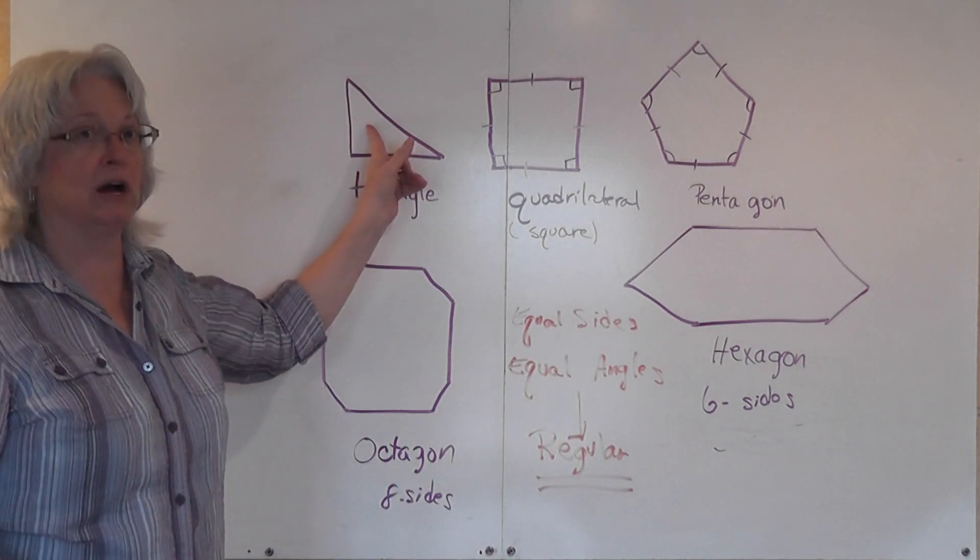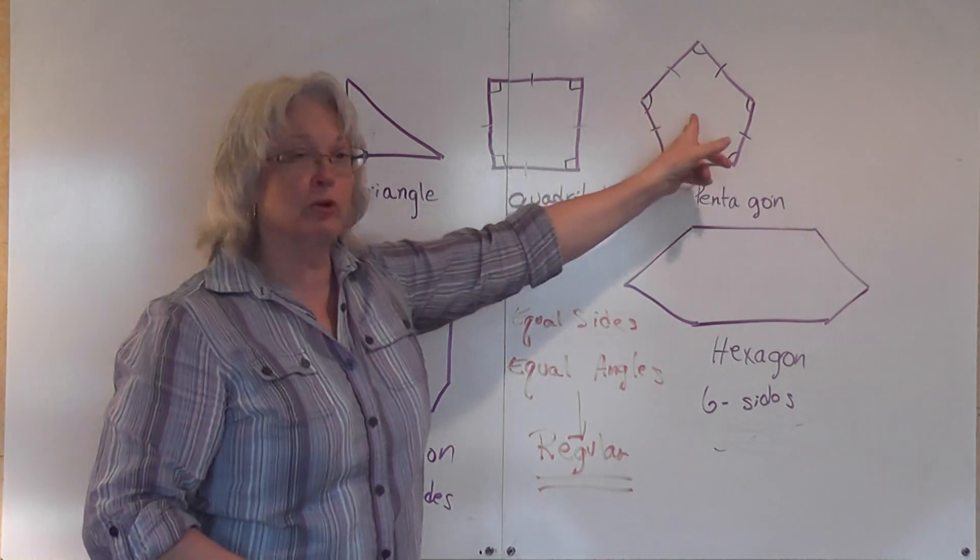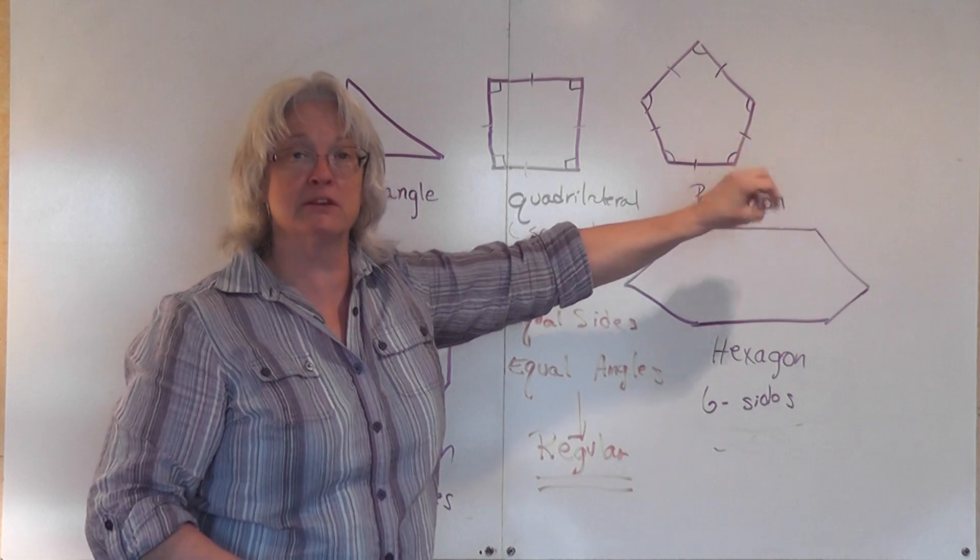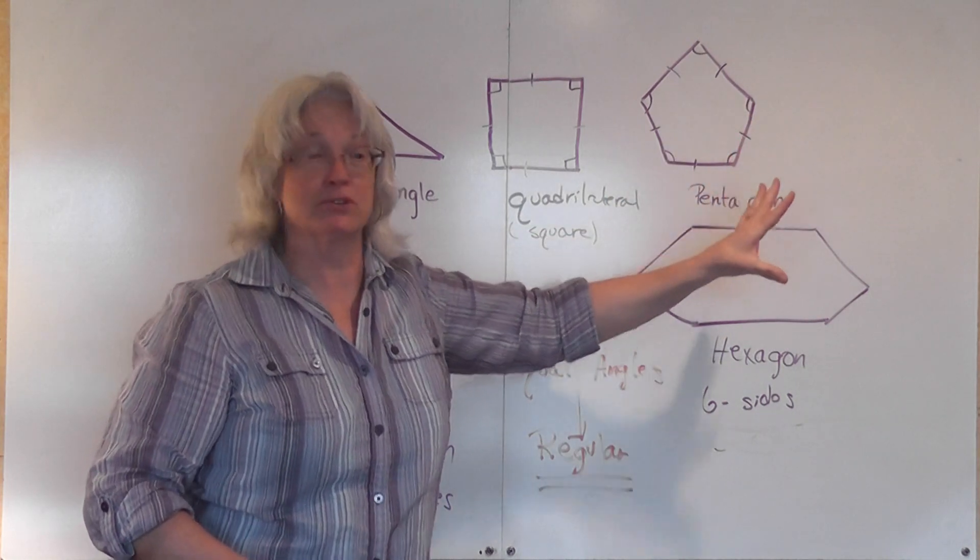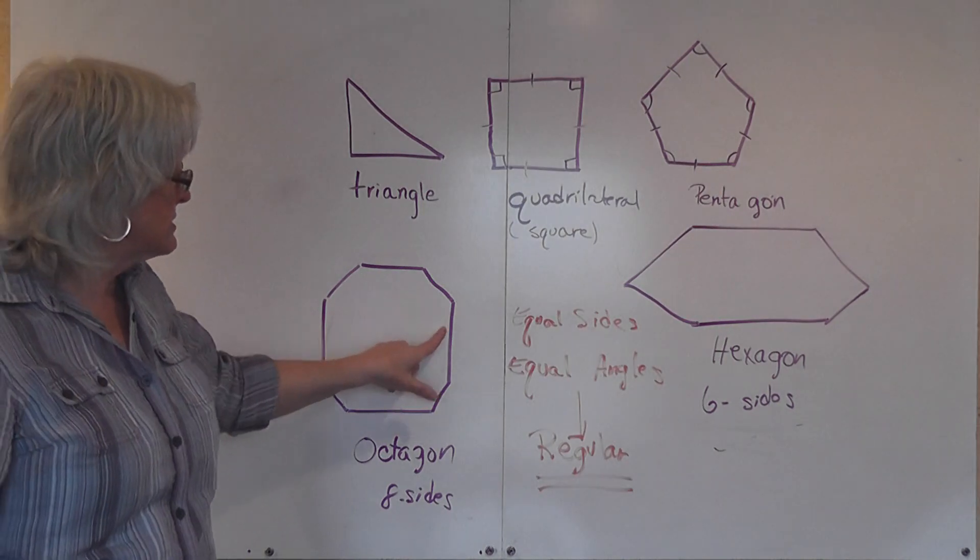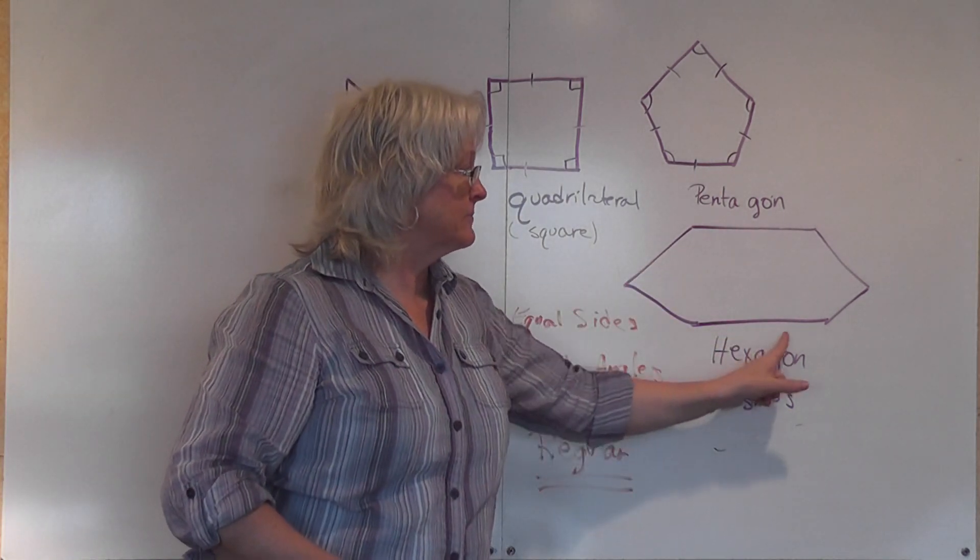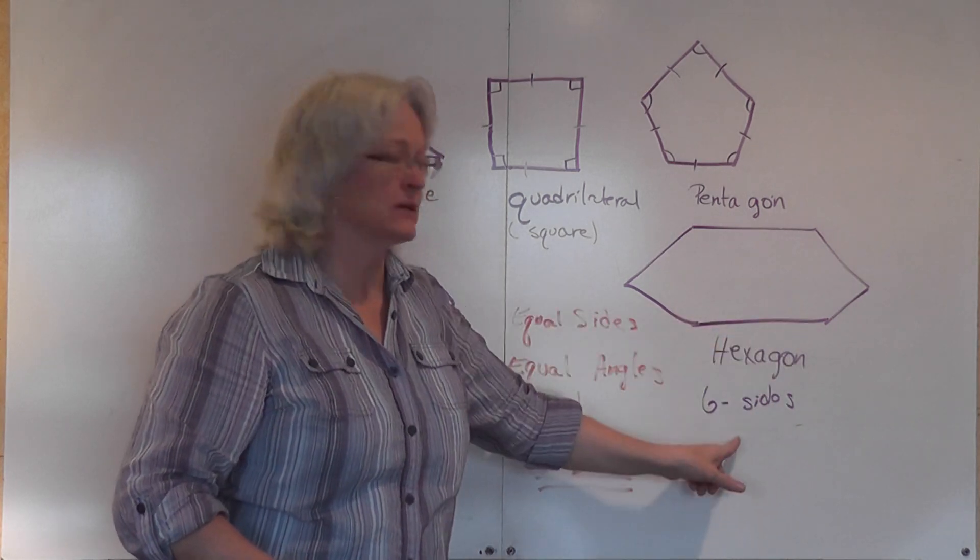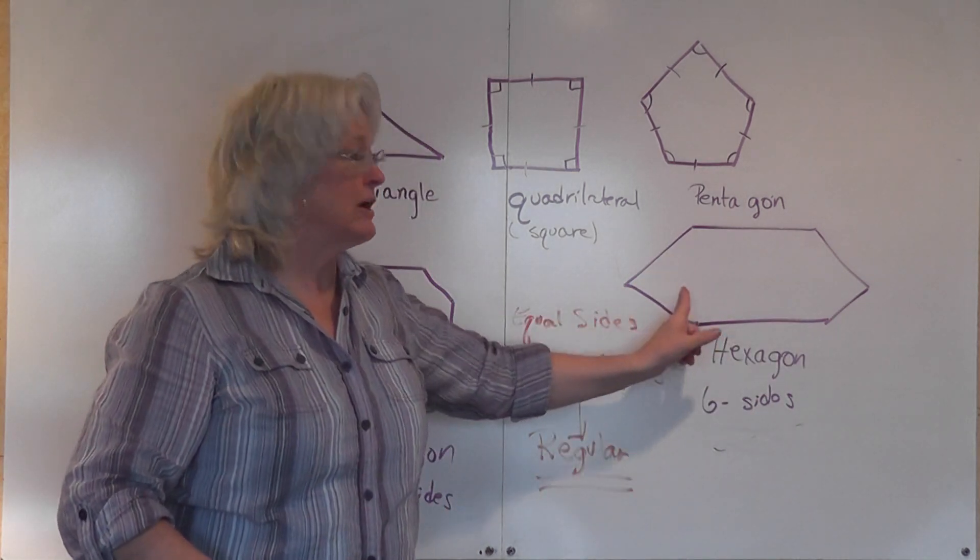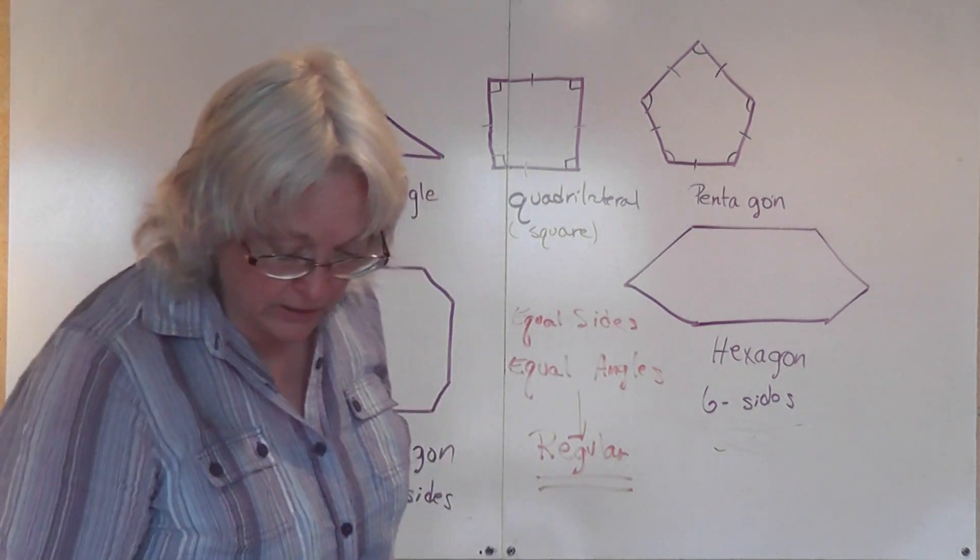When you have a polygon that has equal sides and equal angles, we say that particular polygon is regular. When used in a geometric context, that tells us the sides and angles are all identical. You can't tell that just by looking at the sketch. They're going to indicate with hash marks which sides are the same length and arcs showing the angles are the same.